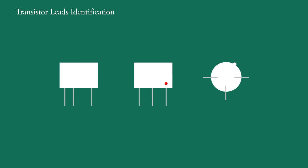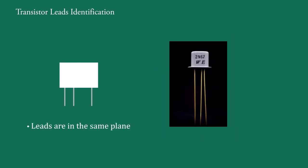There are three systems of identification of leads of a transistor given by the manufacturer. In the first system, the leads of the transistor are in the same plane and unevenly spaced between them. They are identified by the positions and spacing of the leads. The distance between E and B is small, while the distance between B and C is more.